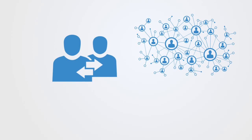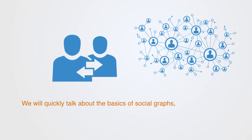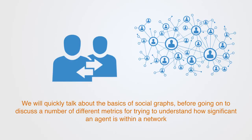In this module we'll be talking about social networks on the micro level, looking at agents and their local community. We'll quickly talk about the basics of social graphs before going on to discuss a number of different metrics for trying to understand how significant an agent is within any given network. Finally, we'll discuss interpersonal ties as we talk about strong and weak connections.